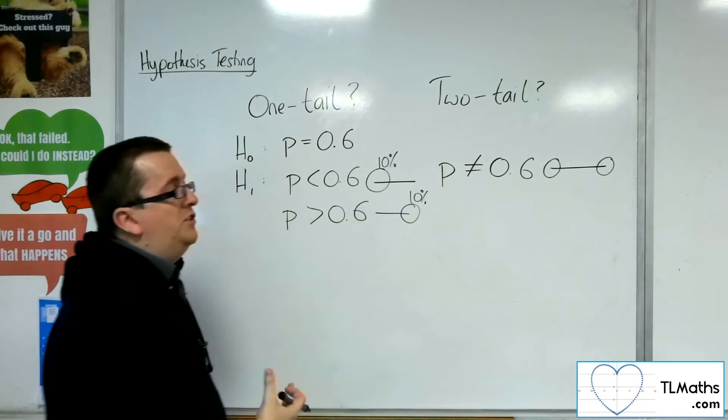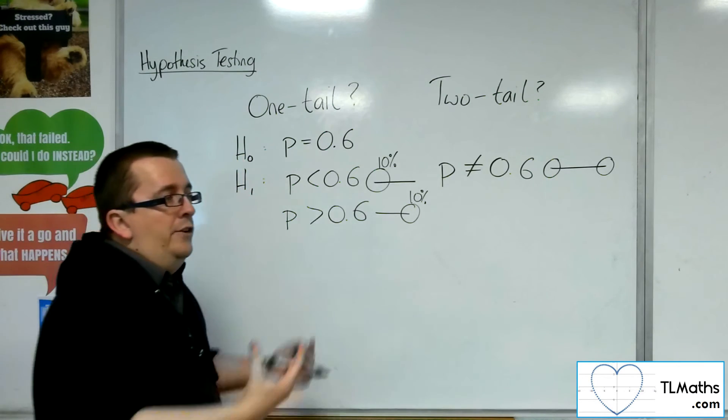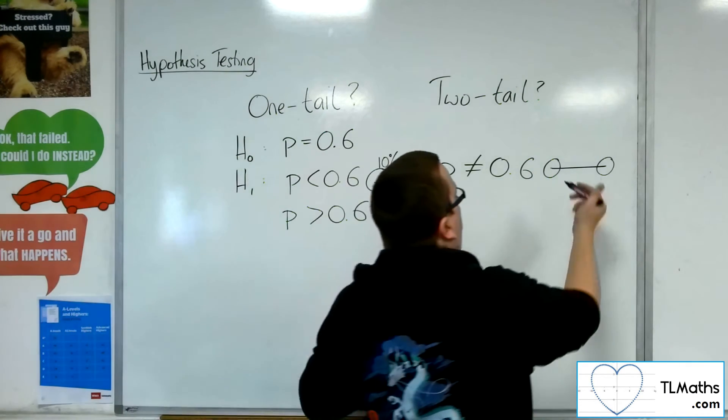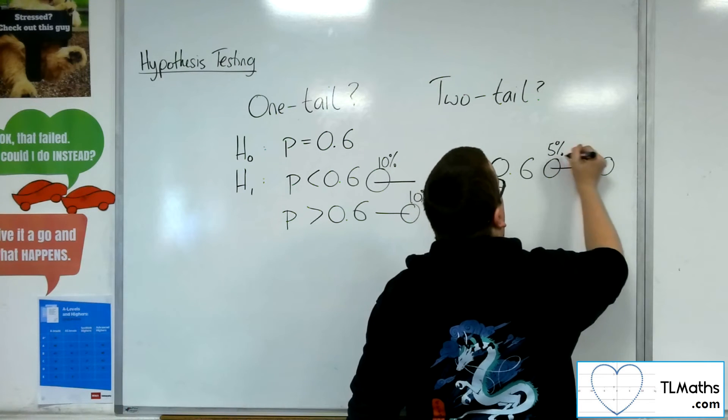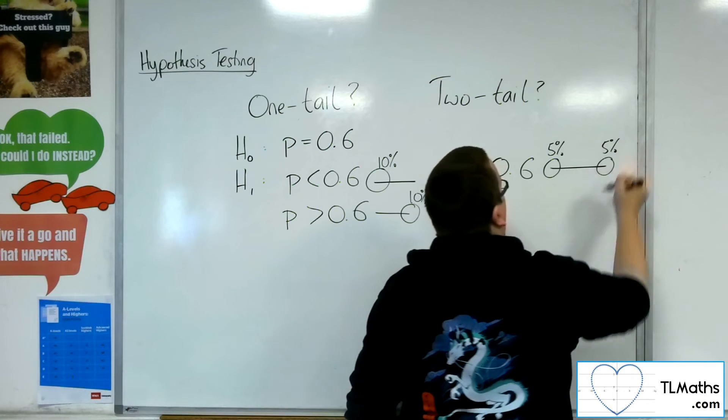But in two-tail, it's a 10% significance level split over two regions. And so we'd have to look at 5% there and 5% there.